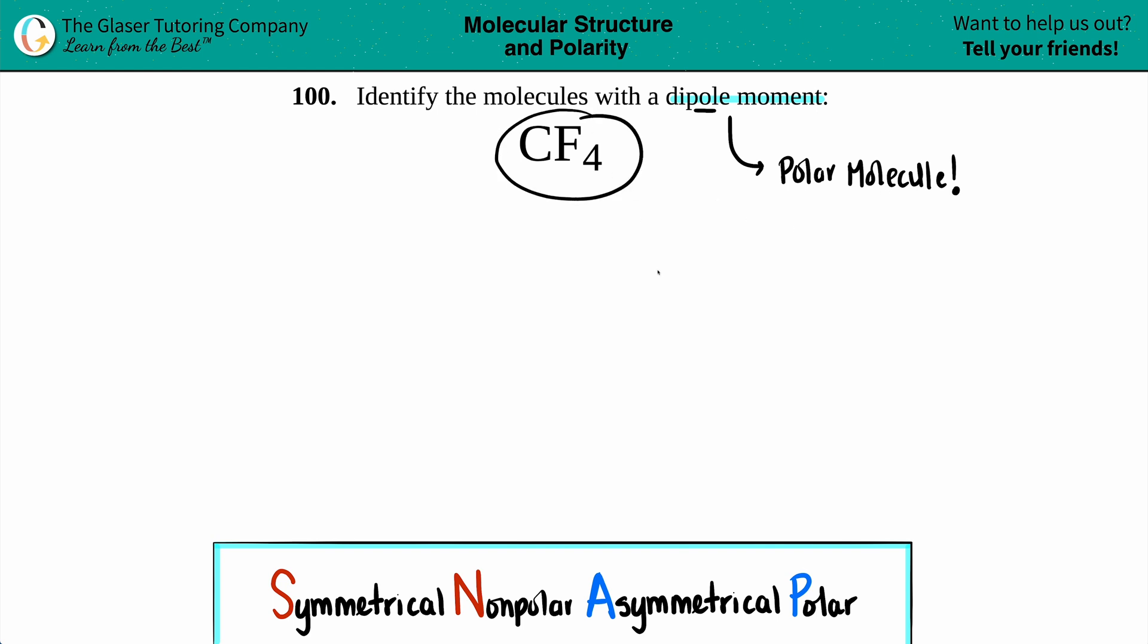Now the idea here is that we might not be able to truly see if we're polar by just looking at CF4. The guaranteed way is you just take a second and draw the Lewis structure because then you can see if there's any symmetry. A Lewis structure can tell you a lot of information - bond polarities, molecular polarities, hybridization, geometry.